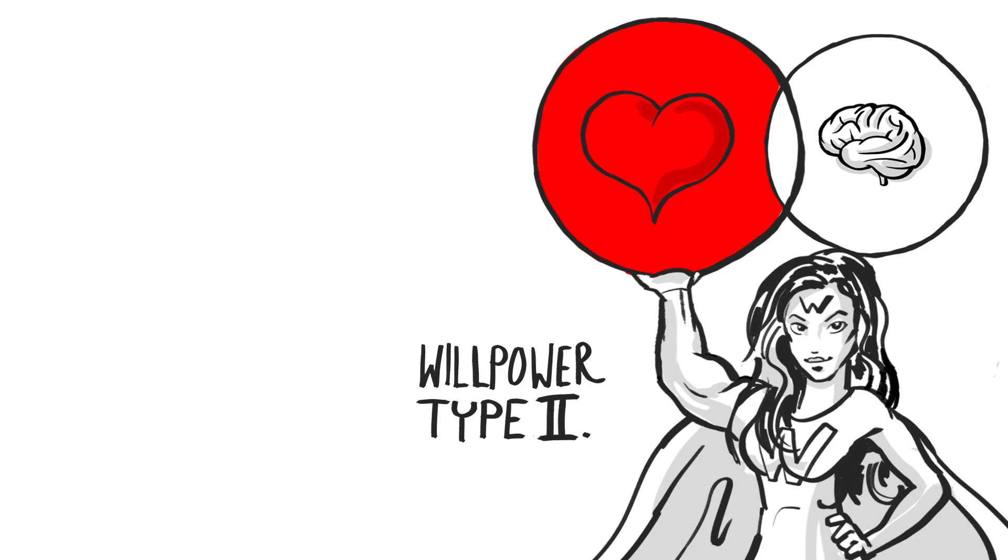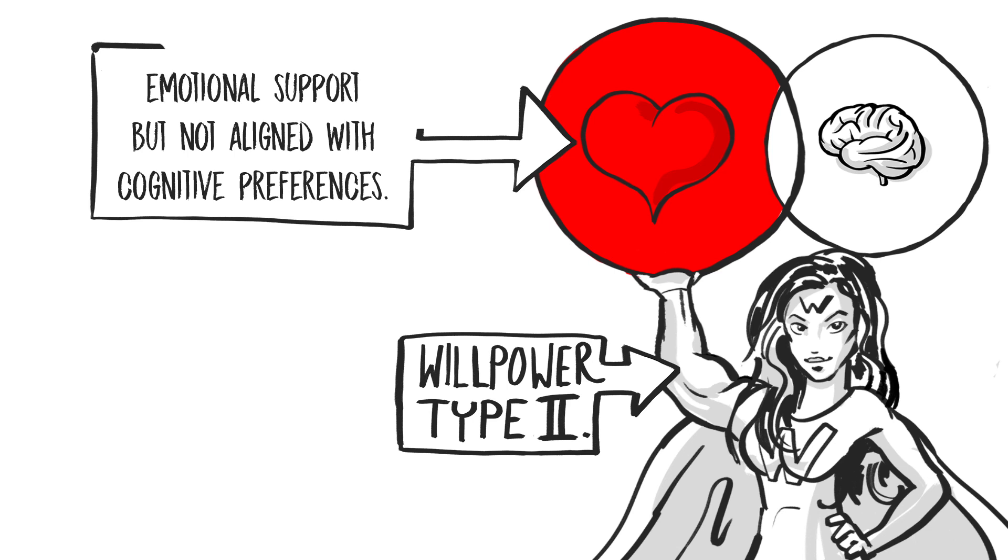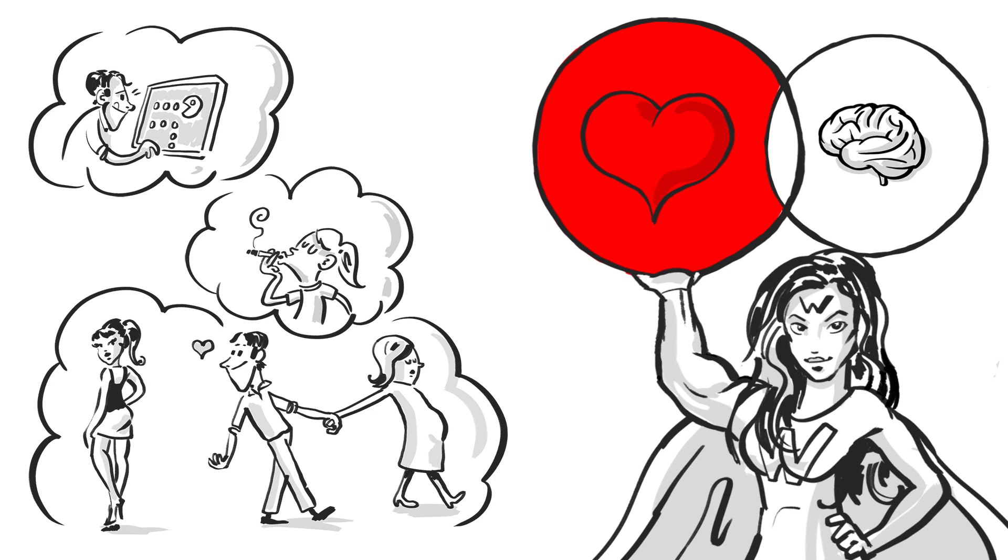Type 2 willpower is needed here in this section. Heart but not head. The activity has your emotional support but is not aligned with your cognitive preferences. We may experience this as a temptation. You would love to do something that is not good for you. Examples are excessive internet surfing, smoking cigarettes, cheating on your partner. These are tempting situations for some of us and we need willpower to deal with them. For instance by imagining that you don't get your job done on time because you wasted it on the internet or that your partner found out about your infidelity.